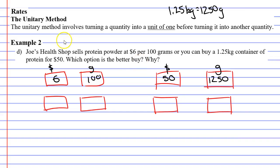I will use the unitary method and convert the grams into the number one. I'm going to divide by 100, which gives me one gram and $0.06 on the left. On the right side, if I want to convert it to one gram, I need to divide by 1,250 this time. What's $50 divided by 1,250? I get $0.04.